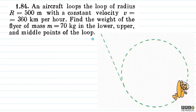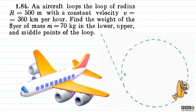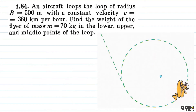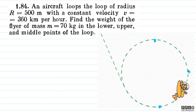Basically, an aircraft is moving in a circular loop. The radius of the circle is 500 meters and the speed is constant velocity V equal to 360 kilometers per hour. The mass of the flyer is 70 kg. We need to find the apparent weight at the lower position, the upper position, and the middle point of the loop.